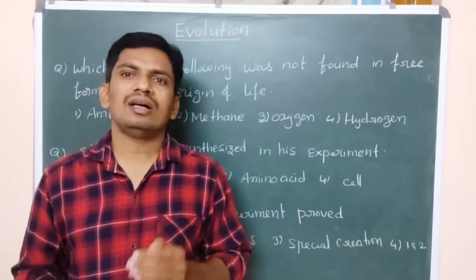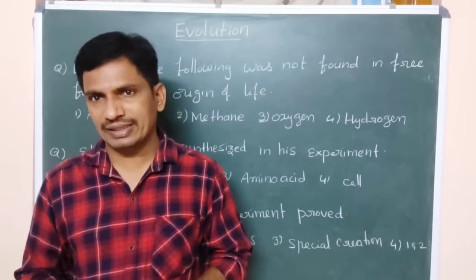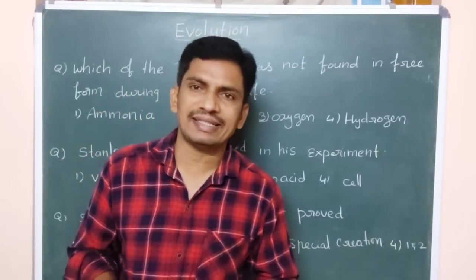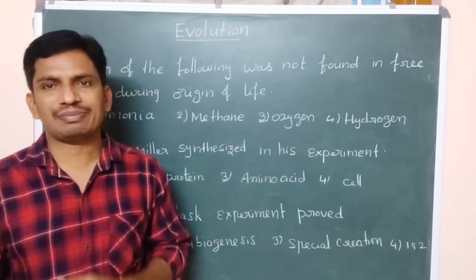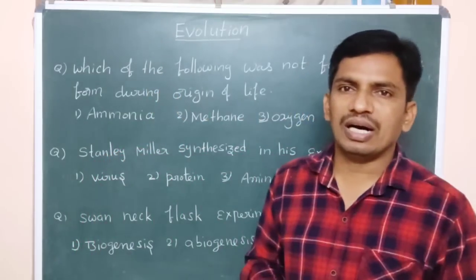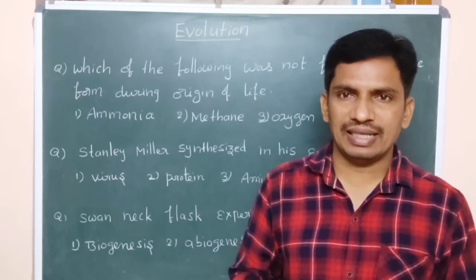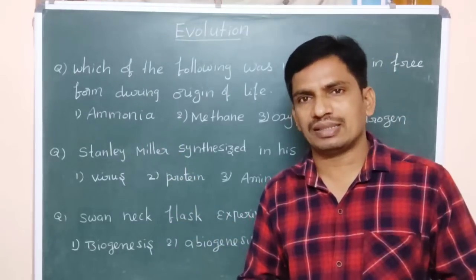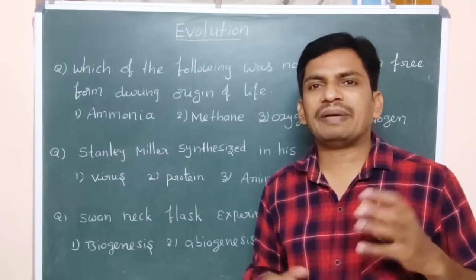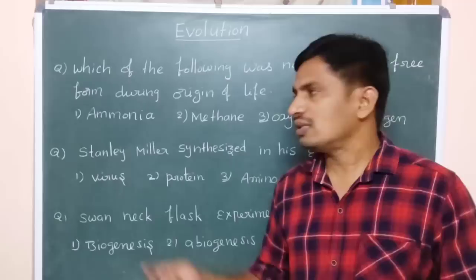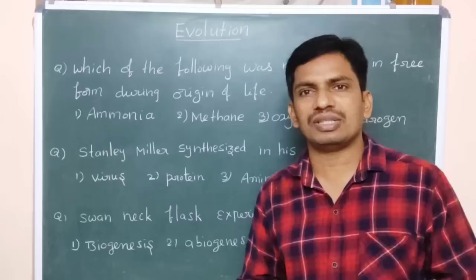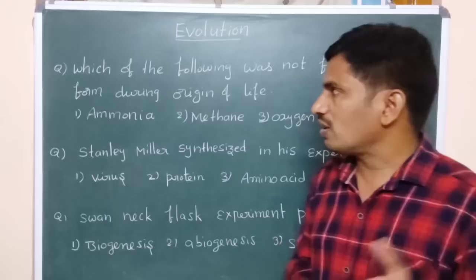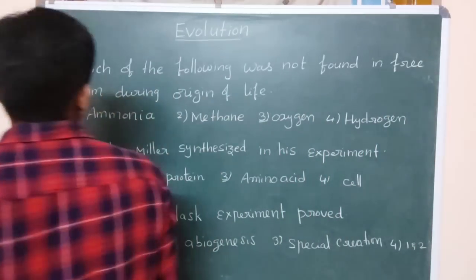And later how life arose on earth planet. These topics are very important. To prove that, different scientists conducted different experiments to prove how origin of earth happened and moreover after that how life arose on the earth. For that there is no particular evidence but some chemical evidence is there, chemical evolution is there, and they have proved by conducting different experiments on that.